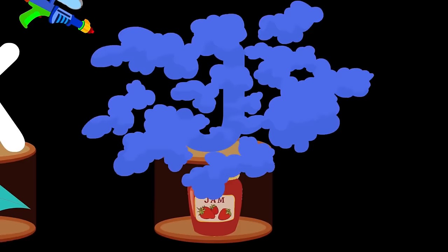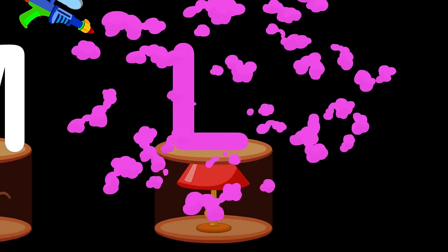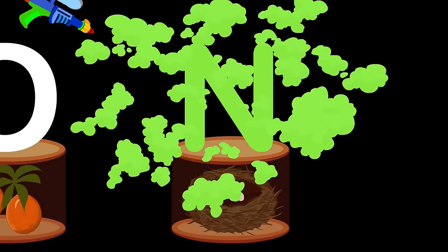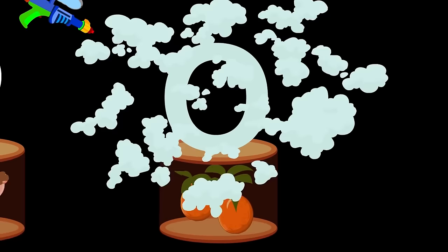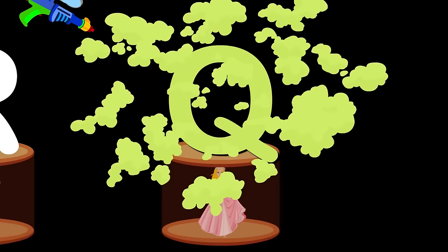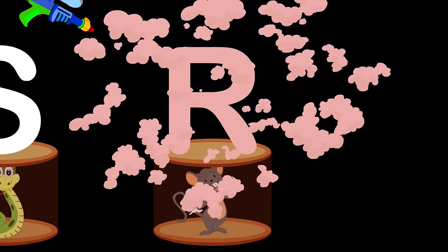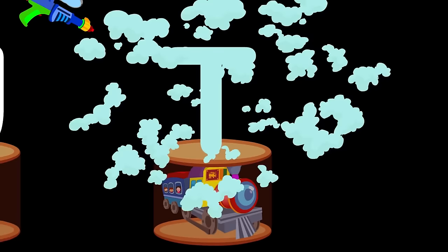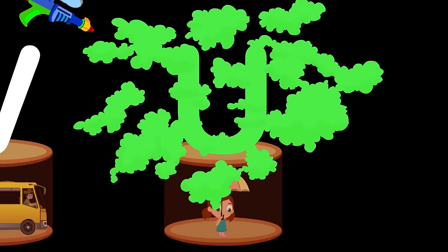I for igloo, u-u-u. M for monkey, m-m-m.